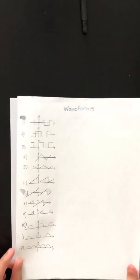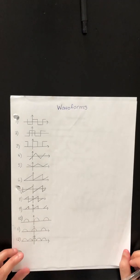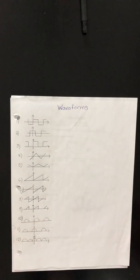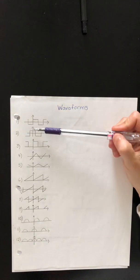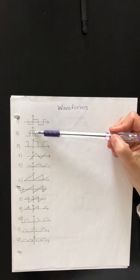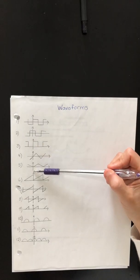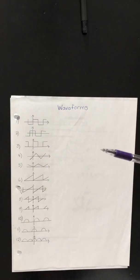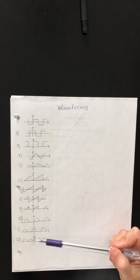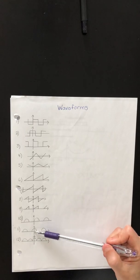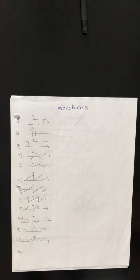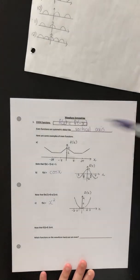Let's look at our waveform handout and select those waves that have even symmetry. Waveform 2 is symmetric about the vertical axis, as are 5, 11, and 12. So we'll make note of those at the bottom of our page.